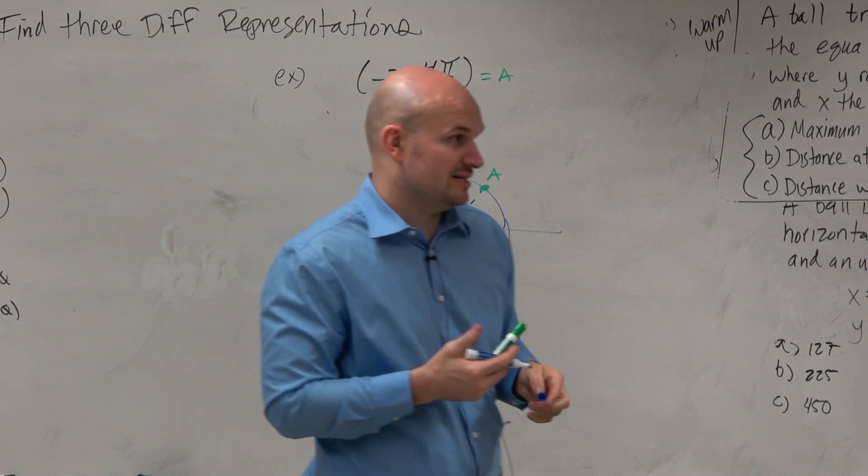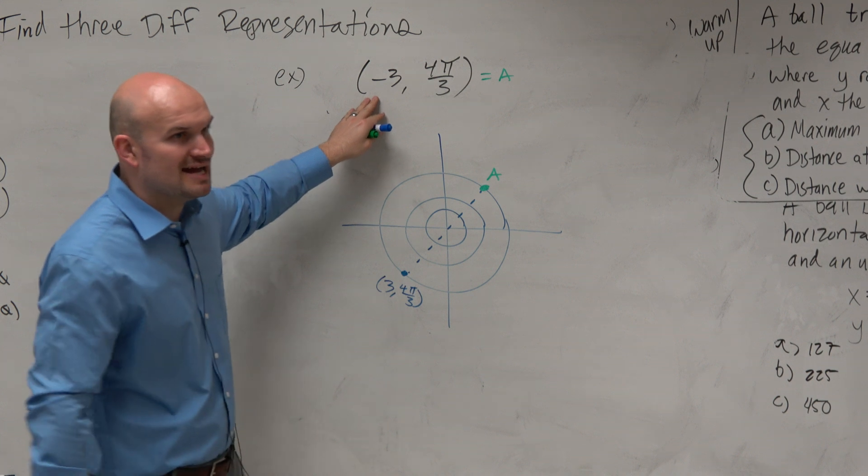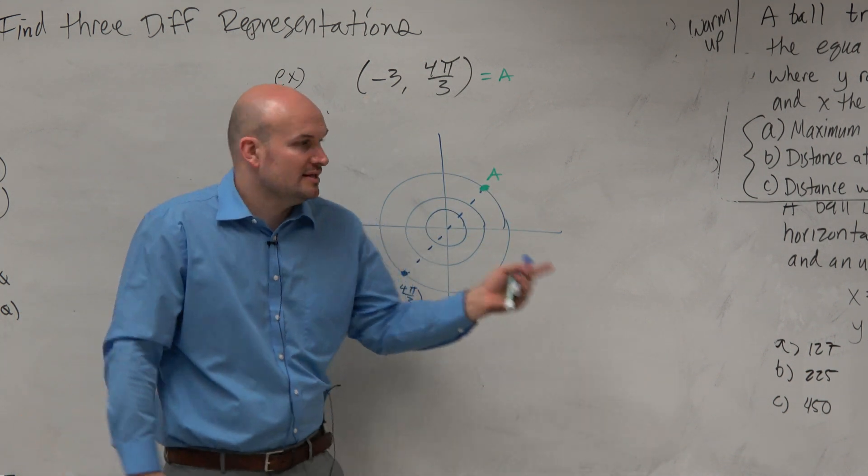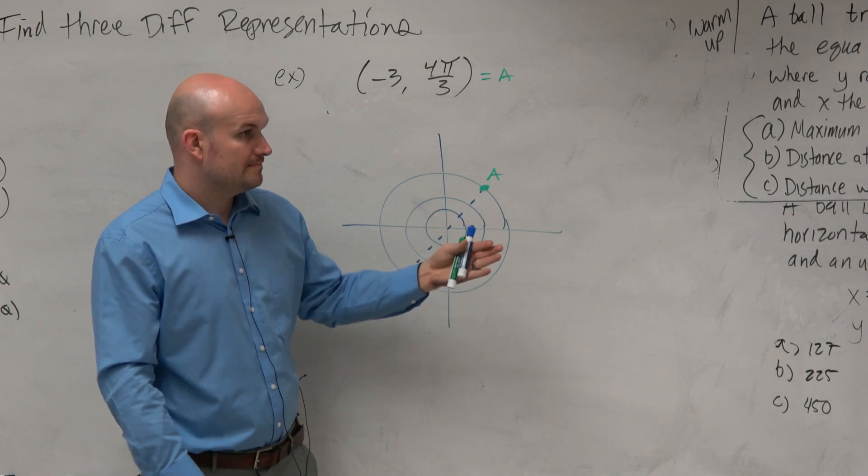The easy way I like to do it, if you're getting stuck or you're confused, is just graph the point as it being positive and then treat the negative as a reflection, because that's all it is. The negative is just a reflection about the origin.